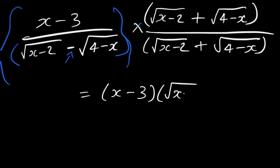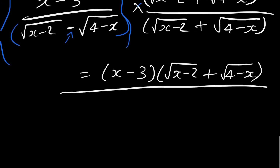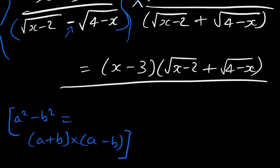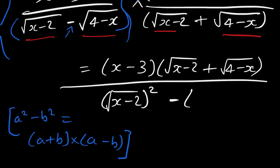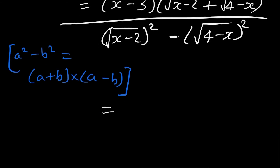After multiplying, the numerator becomes x minus 3 times root x minus 2 plus root 4 minus x. For the denominator, we use the identity a squared minus b squared equals a plus b times a minus b, where a is root x minus 2 and b is root 4 minus x. So the denominator becomes root x minus 2 whole squared minus root 4 minus x whole squared.